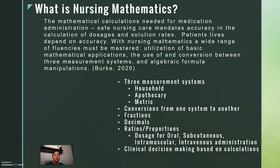The most important part of nursing mathematics is clinical decision making based on these calculations. You have to know what you're doing. You have to understand that every single life that you administer a drug to depends upon the accuracy. Therefore, nursing mathematics is very important as students continue on into the nursing program, specifically in the pharmacology course.